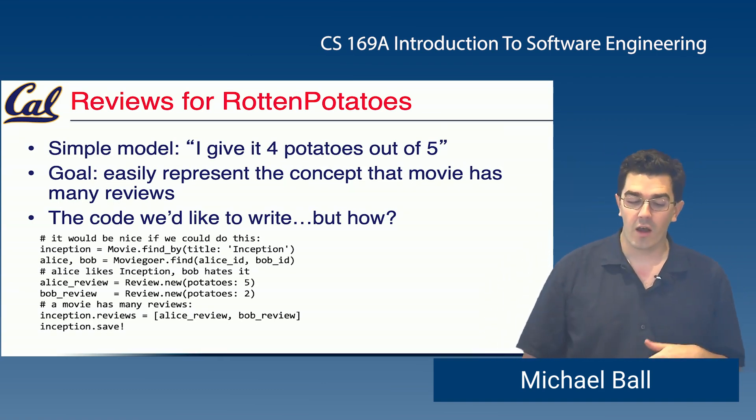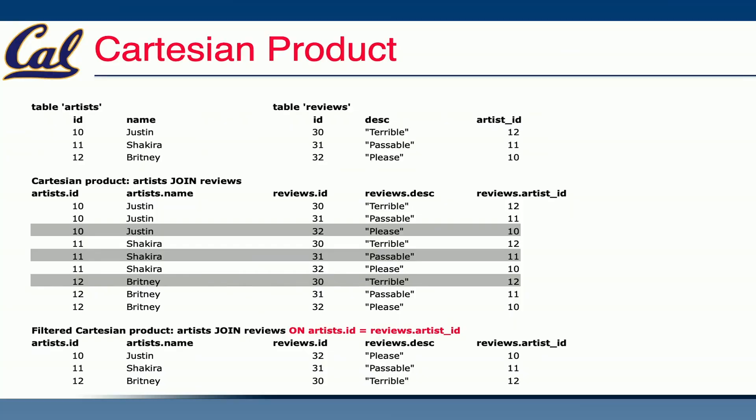We need to think about a little bit of database knowledge about how we can join and link data together. In our database, we have as many tables as we need. We can imagine here that we have a table of reviews and perhaps a table of artists — in this example you could imagine they're movies, users, whatever. Our goal is to combine these two tables into a single unified table.